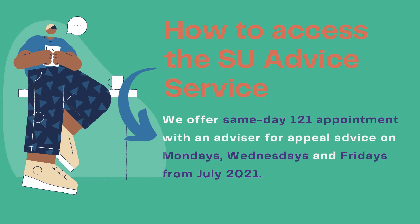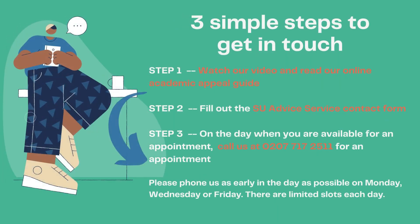From July, we are running a same-day appointment system for students who need advice on a formal appeal. We offer one-to-one appointments on Monday, Wednesday and Friday. To access our services: Step 1, watch our video and read the SU Advice Service Online Guide on Academic Appeal. Step 2, fill out the SU Advice Service Contact Form so we have your contact details and basic information. Step 3, on the day when you are available for an appointment, phone the SU at 020 7717 2511 for an appointment slot. We advise you to phone as early in the day as possible, as available slots are limited.